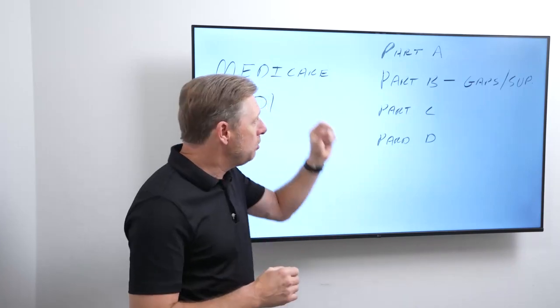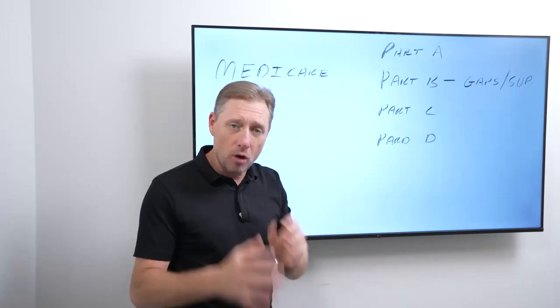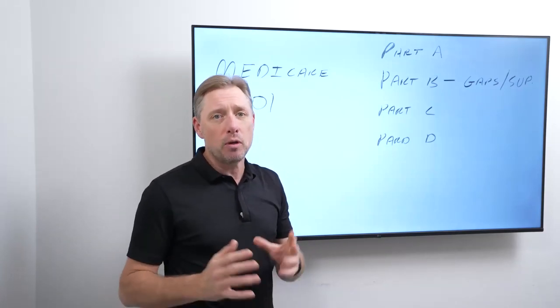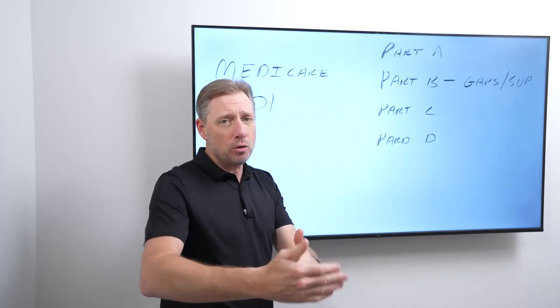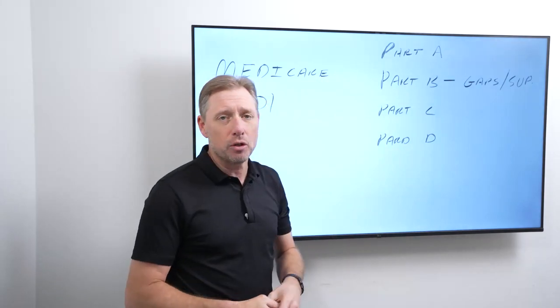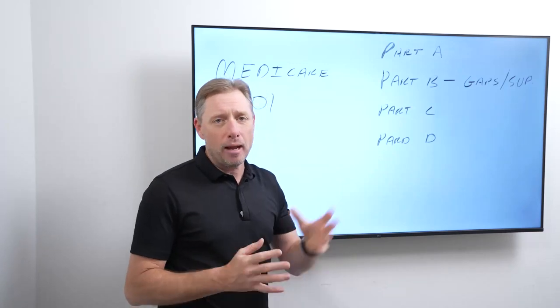So super important to know that you do not have to go on Medicare at 65 if you don't want to on your company plan, but you must prove that you have coverage. If you don't, there can be some penalties you have to pay ultimately. But if you can prove you have coverage, then you don't have to go on Medicare Part A at 65.